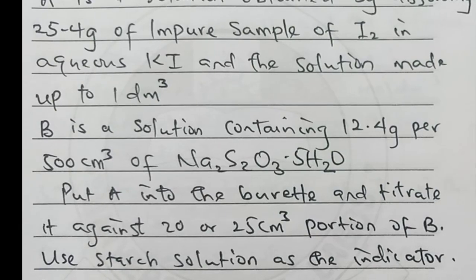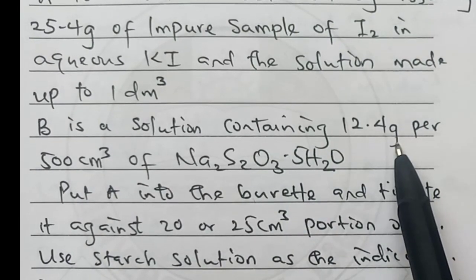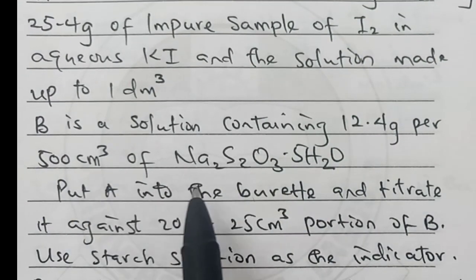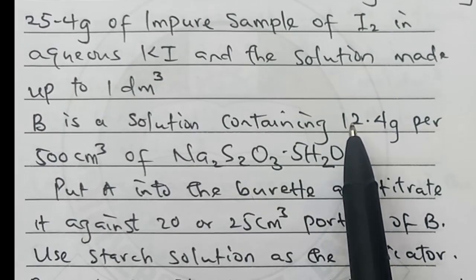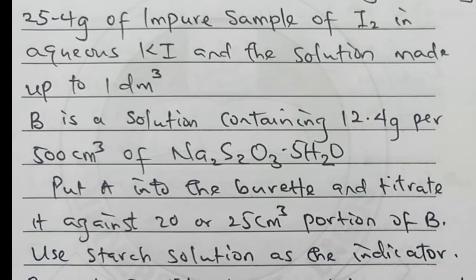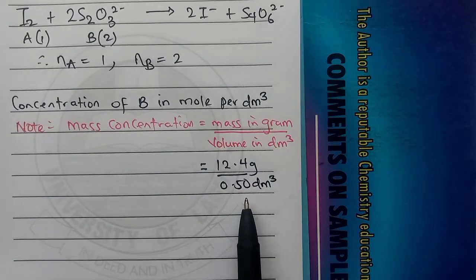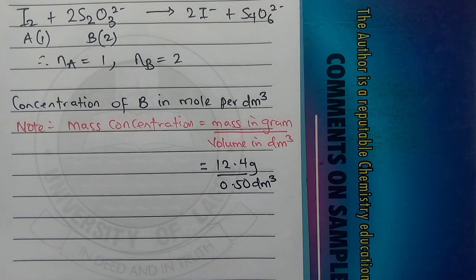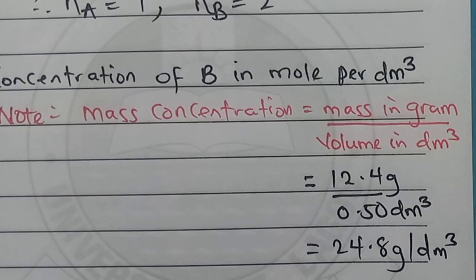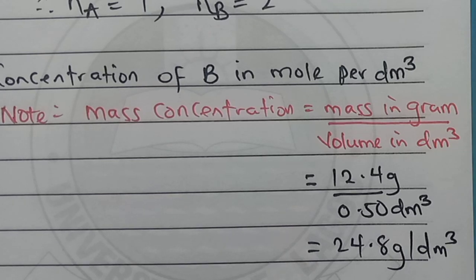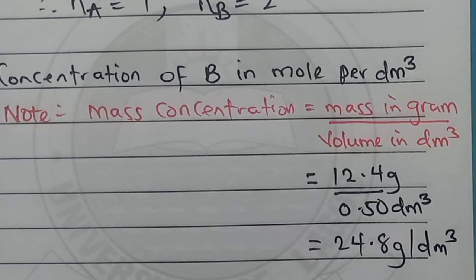Remember that 12.4 grams was dissolved in 500 cm³. We have 12.4 grams over 0.50 dm³. The 0.50 is gotten from 500 divided by 1000, converting centimeters to decimeters. If you check the value, the answer gives us 24.8 g/dm³.